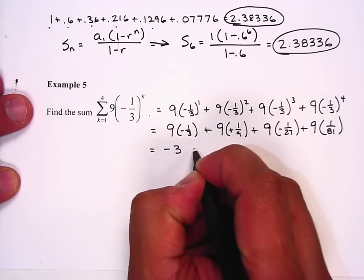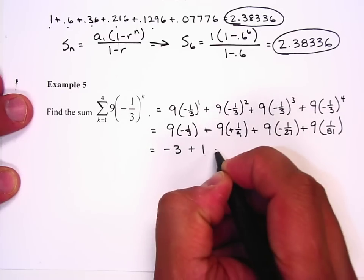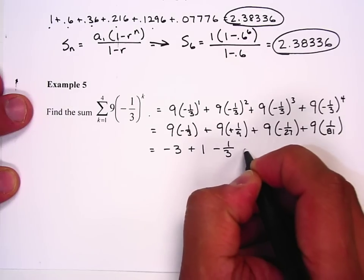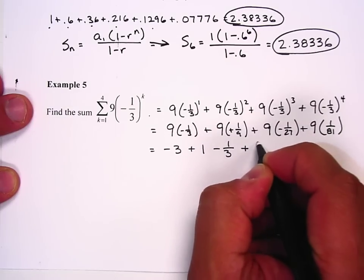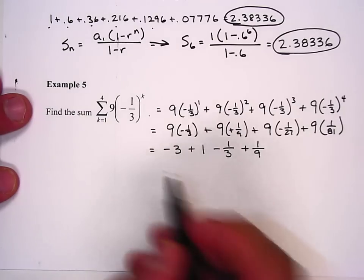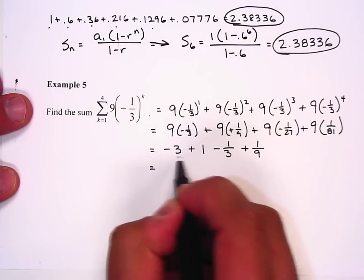Fractions. Everybody loves fractions, right? So that's going to be -2, and let's just do -3/9 + 1/9.